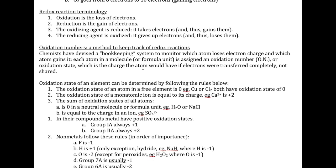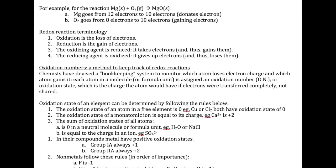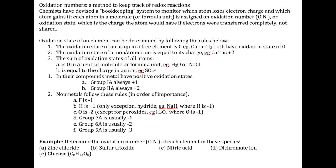Instead of having to count the total electrons as we just did, we can also use something called the oxidation number. It's a method that chemists developed to help us figure out whether a particular reactant is gaining or losing electrons. The calculation is not difficult, but it's even easier if you memorize the rules to assign the oxidation number.